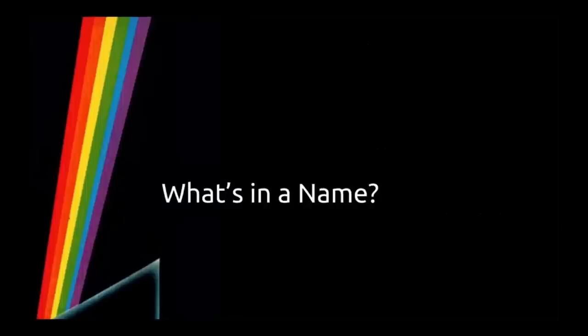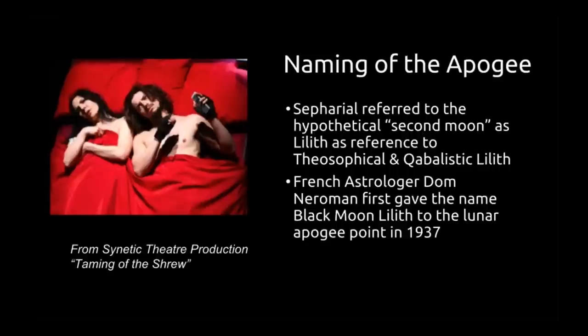Taking that astronomical view forward, let's look at the mythology of where we got these names. The earliest information for our current understanding comes from the astrologer Safariel, who was also a theosophist. He spent a lot of time with Madame Blavatsky in the 19th century up until her death. He was the originator of this information, though he didn't give us the technical terms we use now. He referred to the hypothetical second moon as Lilith, drawing on theosophical and Kabbalistic literature.